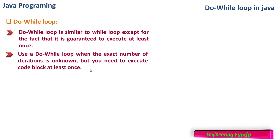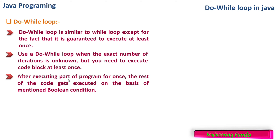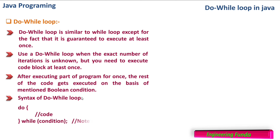Use a do-while loop when the exact number of iterations are unknown, just like the while loop, but you need to execute the code block at least once. You want something to happen first and then check the condition. In such a scenario you have to use the do-while loop. After executing part of the program once, the rest of the code gets executed on the basis of the mentioned boolean condition.